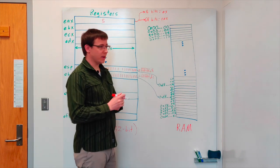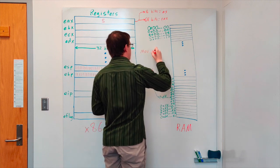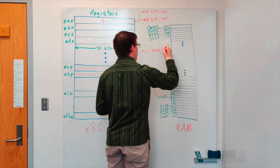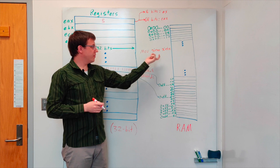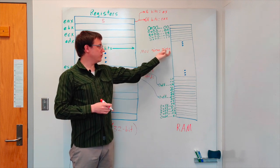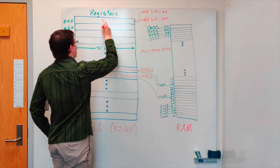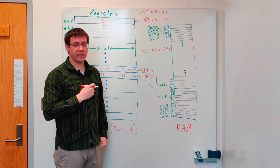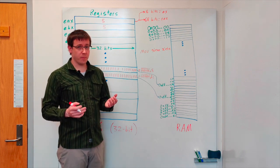We can accomplish that with the assembly instruction move percent EAX percent EBX. This will move the data that's in the EAX register to the EBX register. So we'll get a copy of that same 32-bit 2's complement binary value in the EBX register. We can also copy data to and from memory.